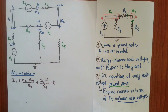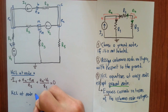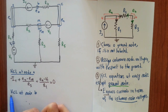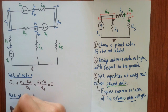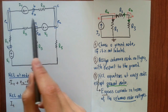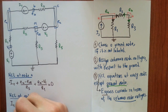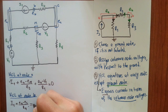Let's write KCL at node B. There are two currents related to node B. I1 is leaving node B, so we write plus I1. We don't know current through R4, and voltage across it is Eb minus Ec, divided by R4. That's all for the node equation at node B, set equal to zero.